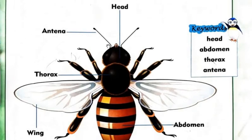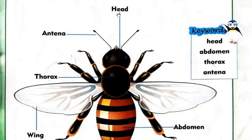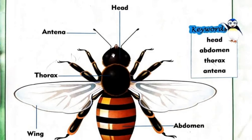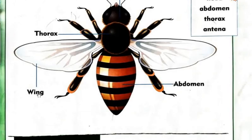Antennae. Which is the center part, we call thorax. Next one is wings — W-I-N-G, wing. Which is the part next to the body.